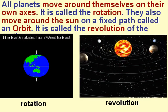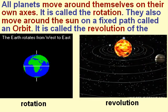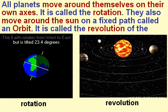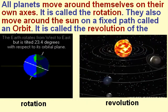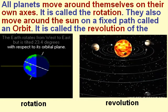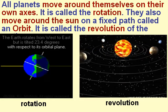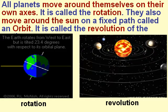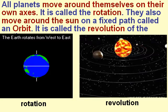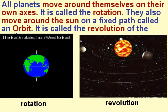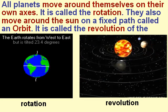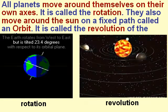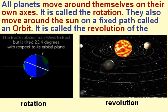All planets move around themselves on their own axis; it is called rotation. They also move around the sun on a fixed path called an orbit; it is called the revolution of the earth.